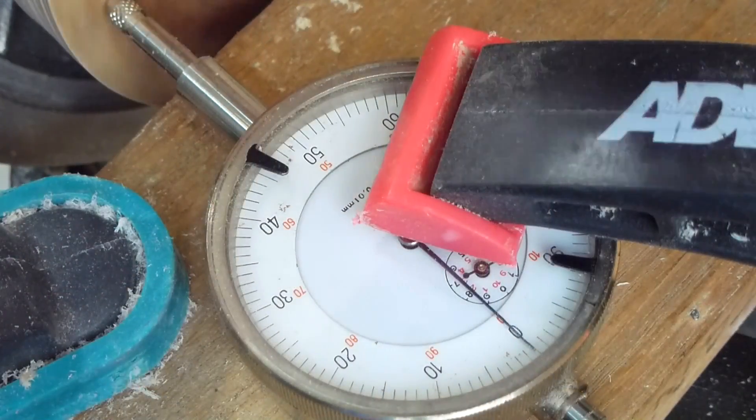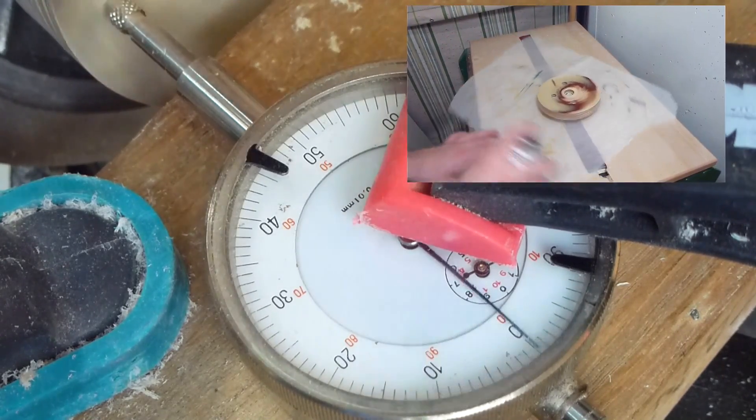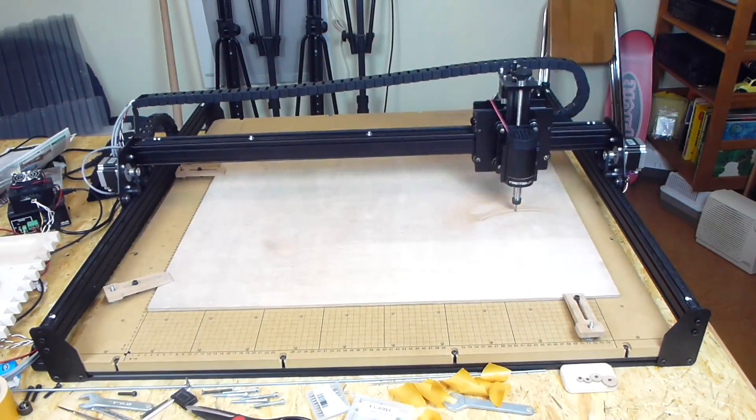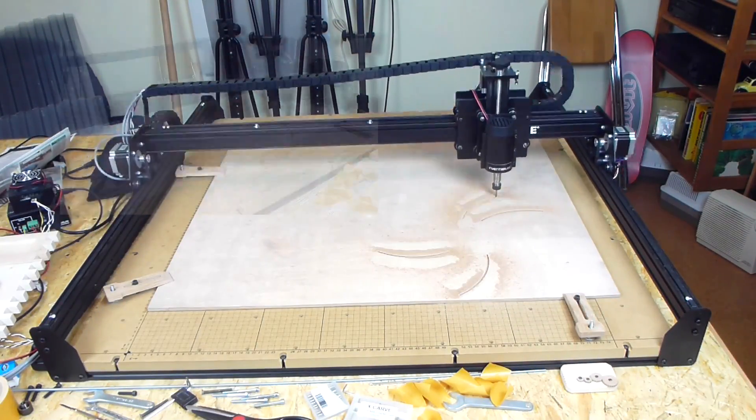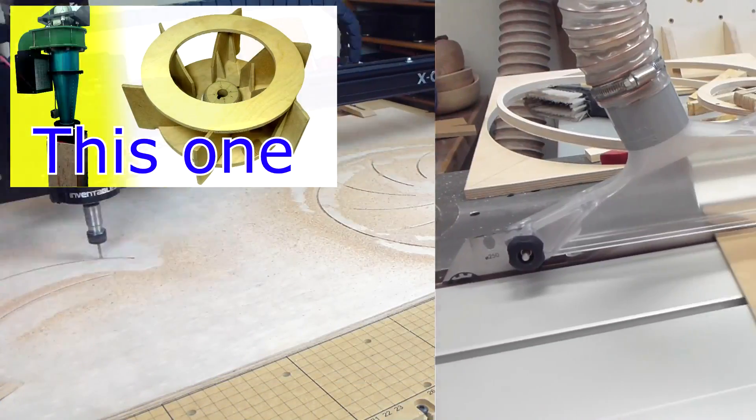I managed to get a tolerance of about five one hundredth of a millimeter and then coated it with spray lacquer. While I was doing this I let the CNC cut out the two impeller discs. These shapes might seem difficult to make without a CNC but in another video I showed how you can make that.